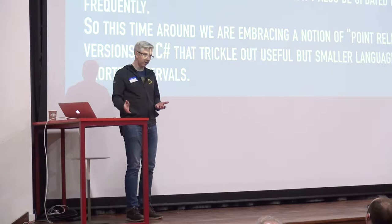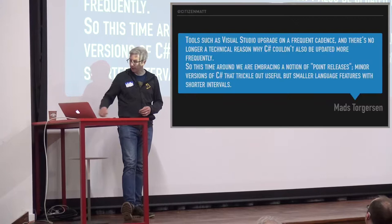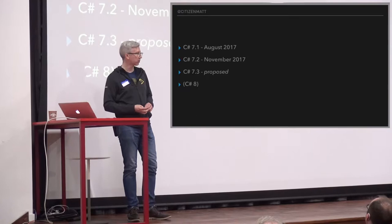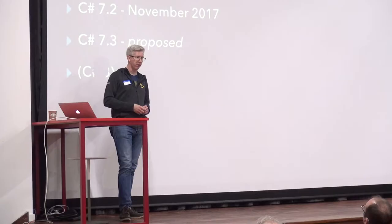Because Visual Studio doesn't have to be tied to releases anymore, and because it's being updated more frequently, they can actually release C# more frequently too. Instead of having to wait years to get new features, you can get them sooner and use them sooner. We've had C# 7.1 released in August last year, 7.2 in November. 7.3 is in progress right now with some interesting features. C# 8 is also being worked on with bigger features — no timelines for the last two though.